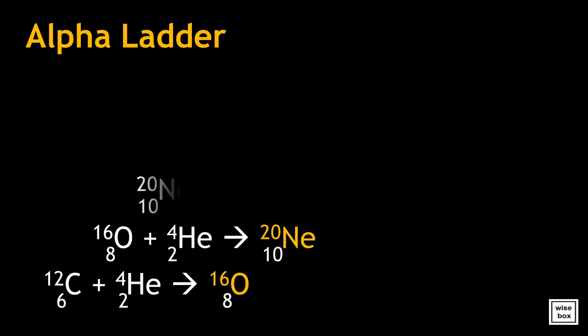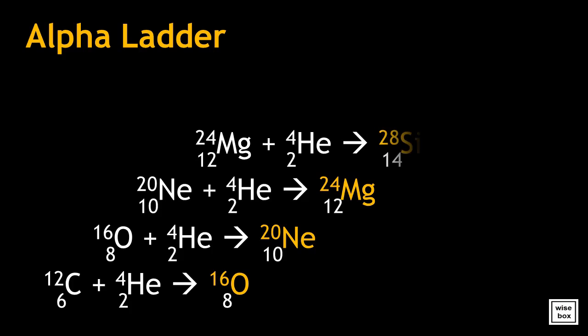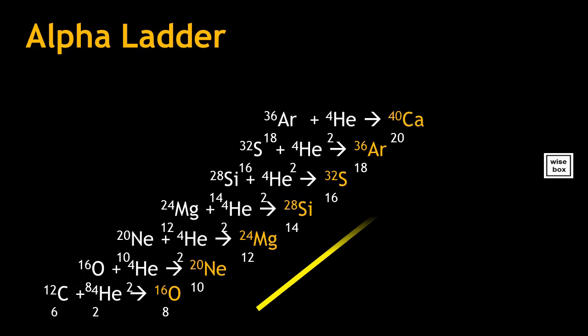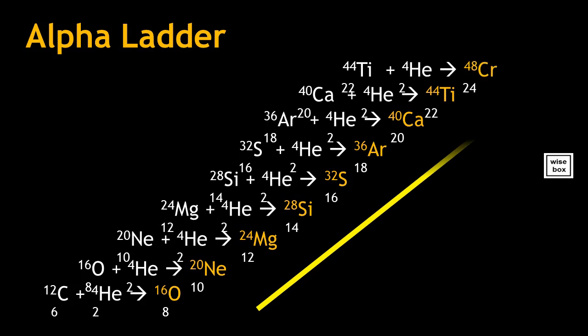The neon-20 atom fuses with an alpha particle and results in a magnesium-24 atom. The magnesium-24 atom fuses with an alpha particle and produces a silicon-28 atom. Each atom fuses with an alpha particle in sequence until the process reaches the formation of iron.